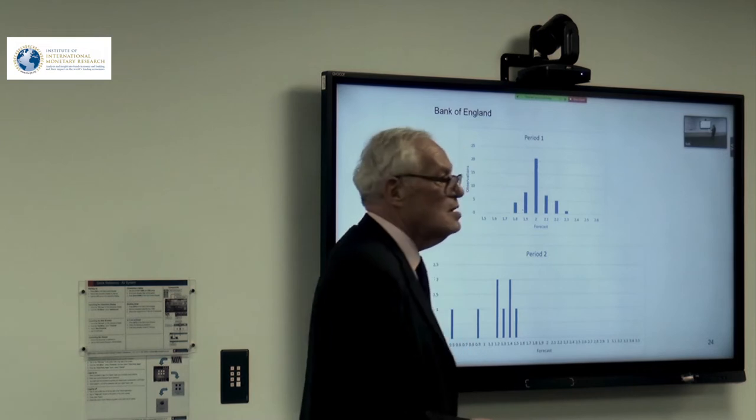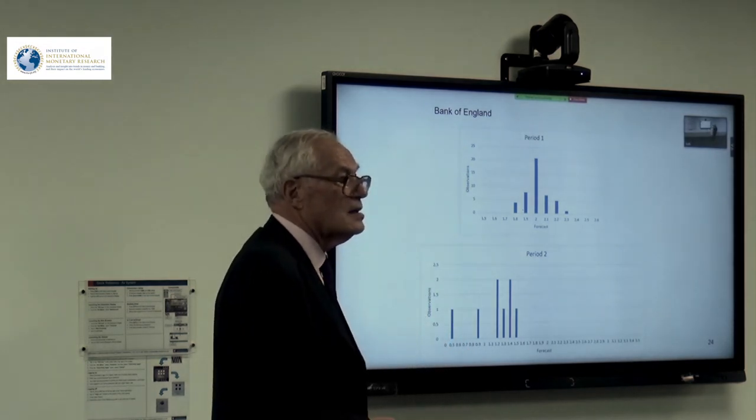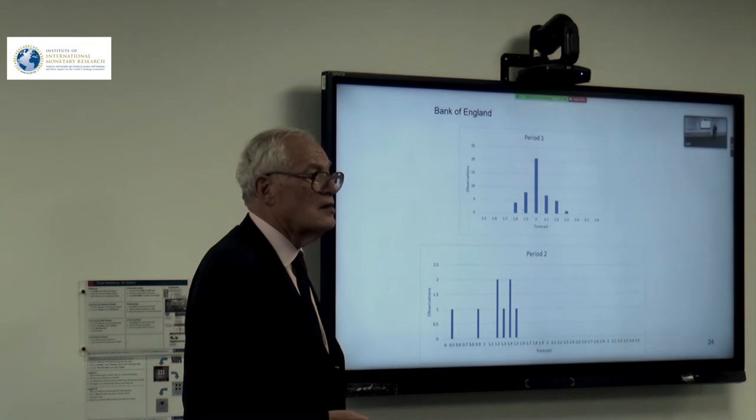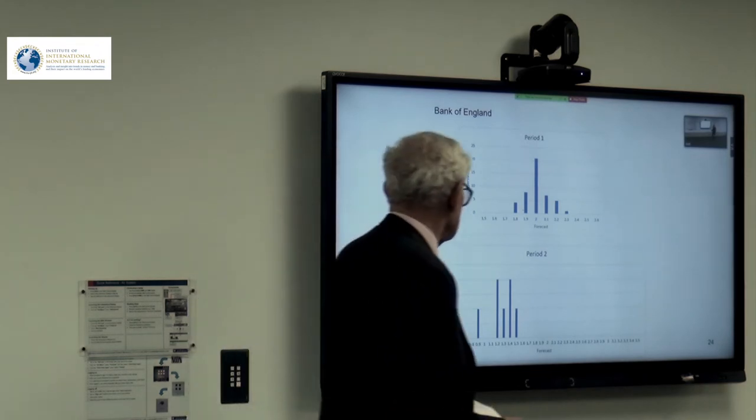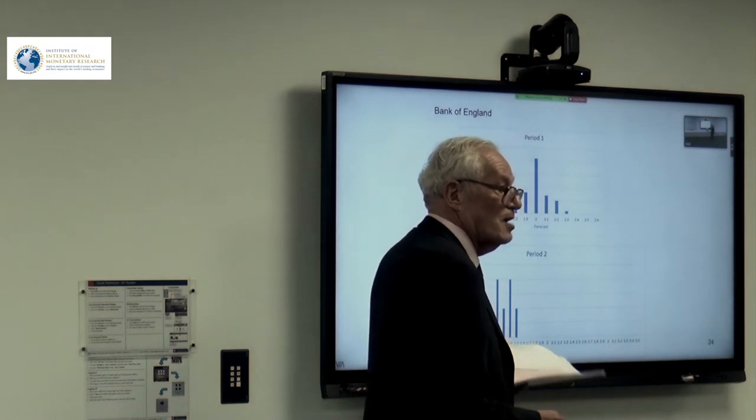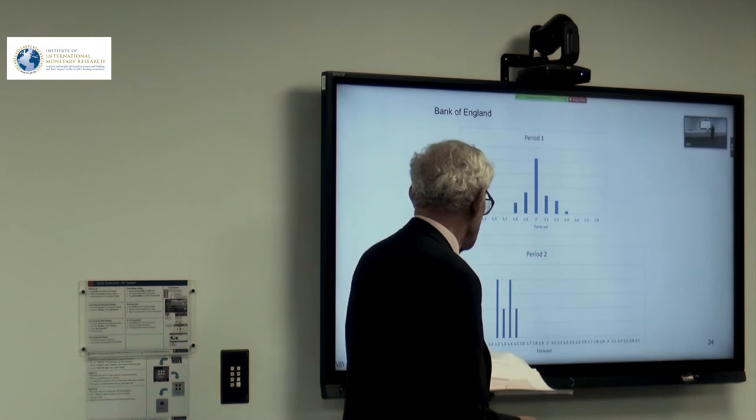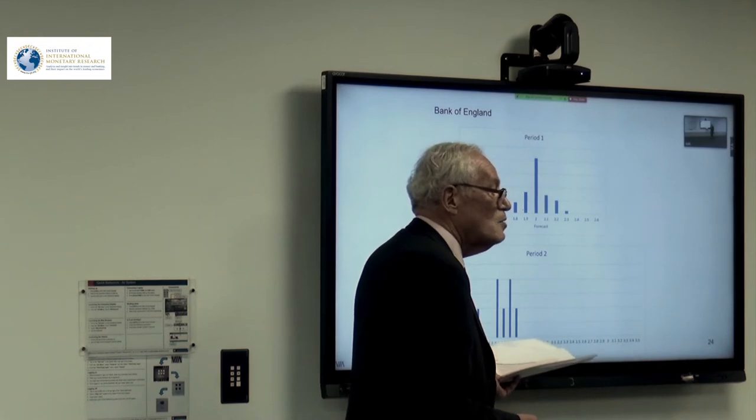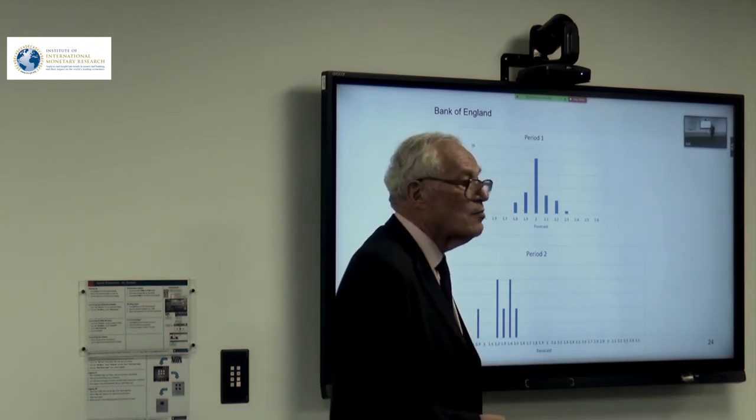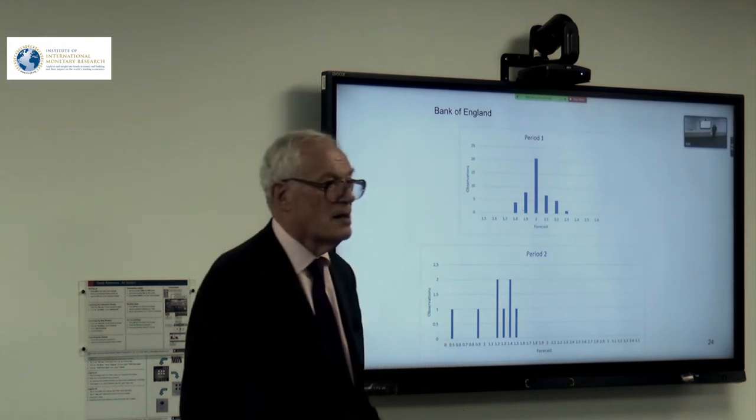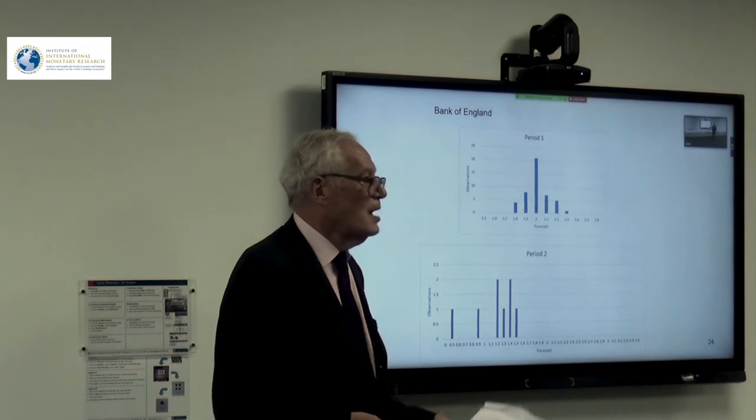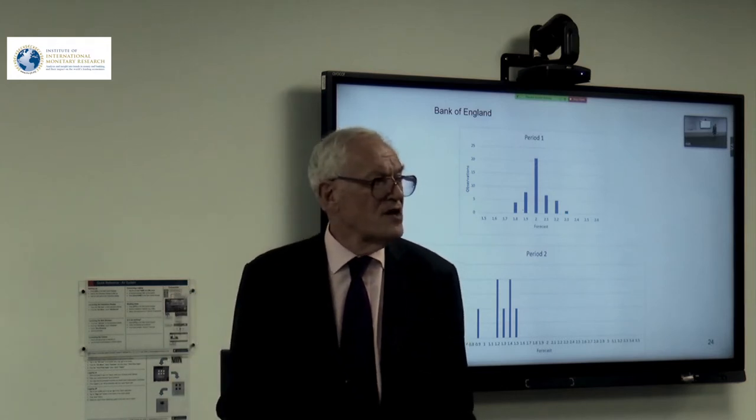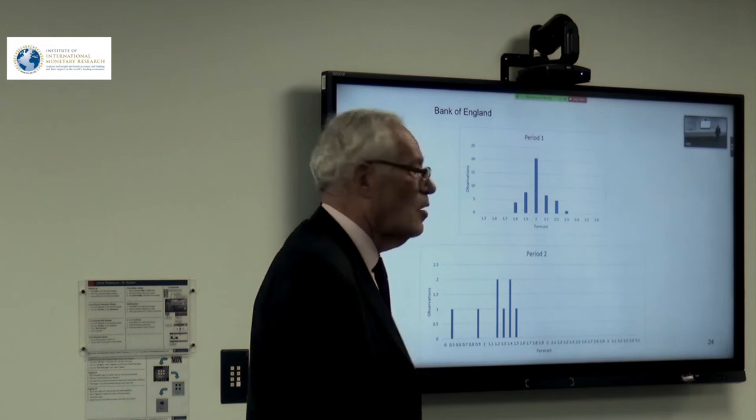Now then in period two, which was the crisis period, the Monetary Policy Committee actually thought that the crisis would go on and on. They thought that two years from the date of the forecast being made, the inflation rate would not come higher in their forecast than 1.5. In fact, they saw the low inflation and the generally disinflationary, deflationary pressures arising from the great financial crisis as going on and on.